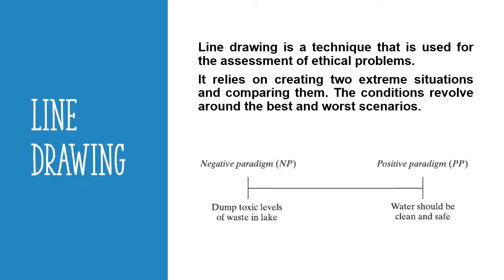The first approach we are going to discuss is called line drawing, and it is exactly how it sounds. We are trying to draw the line of the situation we are in to make sure we are in a healthy spot. Assessing ethical problems using line drawing starts by creating the best case scenario and the worst case scenario of a given situation. They are also referred to as the positive and negative paradigms.